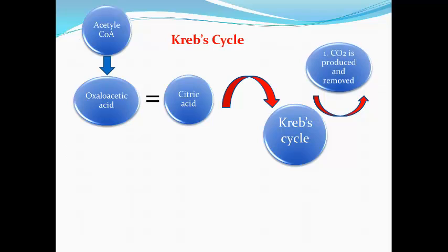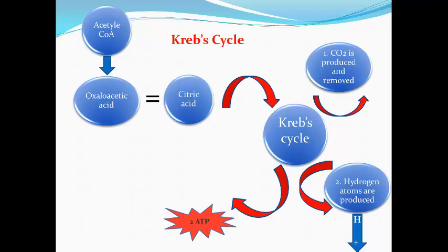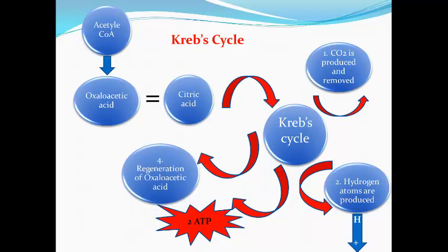The first reaction is where carbon dioxide is produced, removed, and exhaled by the lungs. The second part of the Krebs cycle is where citric acid is oxidised and hydrogen atoms are produced and then removed. These hydrogen atoms are sent to stage 3, which we'll come to in a moment. The third thing the Krebs cycle does is produce two molecules of ATP. The fourth stage is the regeneration of the oxaloacetic acid.